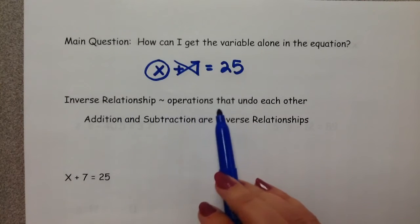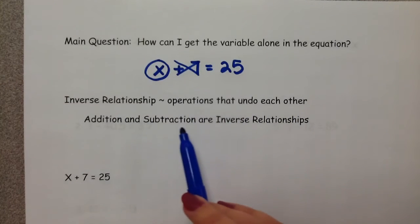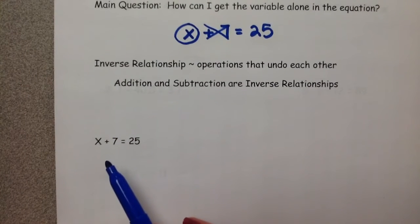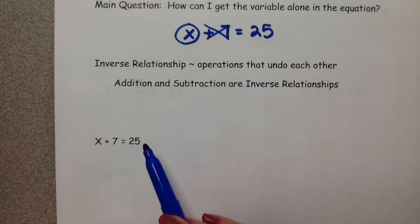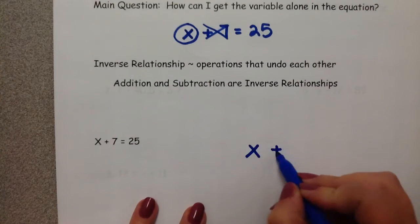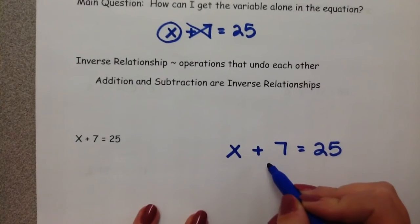Inverse relationships are operations that undo each other. For example, addition and subtraction are inverse relationships. So if we go back to our algebraic expression of x plus 7 equals 25, what we would do is the inverse operation. Instead of adding 7, we would subtract 7.